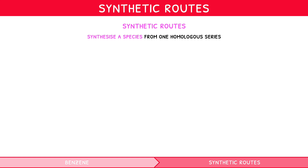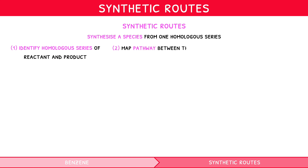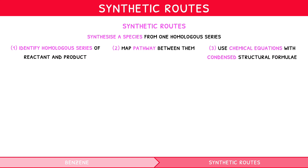The key to these questions is to first identify the homologous series of the initial reactant and final product, and think in both directions to map a pathway between them. It is important to note that chemical equations using condensed structural formulae are best for these questions — do not draw full mechanisms involving curly arrows. However, the conditions of each reaction must be stated.